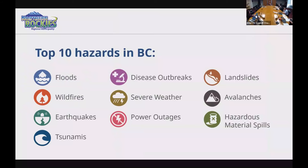We have essentially 10 hazards within the province of British Columbia, and not all of these require evacuation or are relevant to the Northern Rockies. Within our area, our number one, two, and three risks are wildfires, hazardous materials and power outages, and severe weather. Those are probably our biggest risks, and only a couple of those require evacuations.